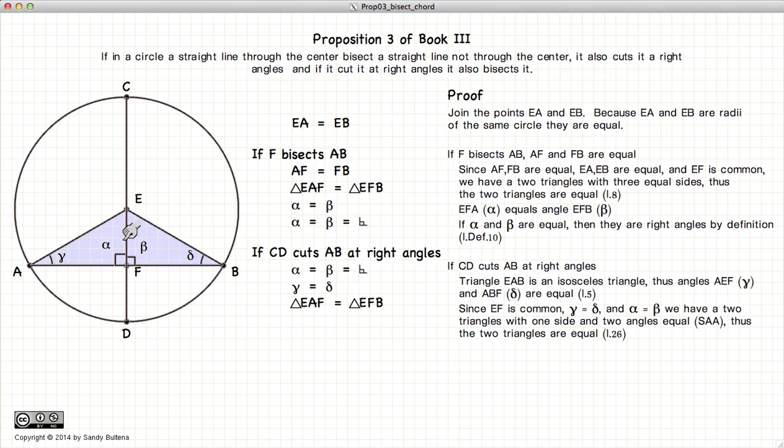Now, according to Proposition 26, if we have angle, angle, side equal between two triangles, they are equal in all respects, and if they are equal in all respects, then the bases are equal. In other words, AF is equal to FB.